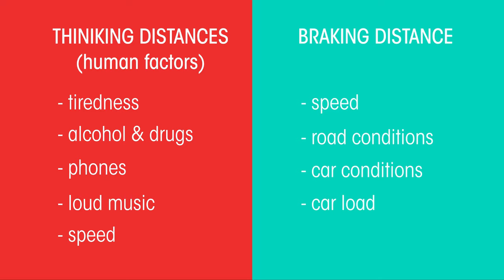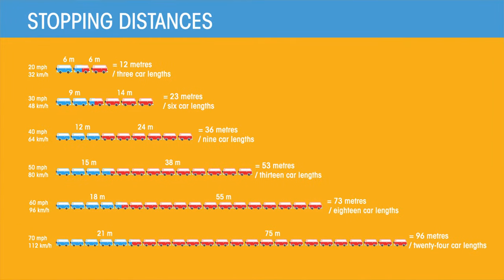But why is it important to understand stopping distances? Well, the distance taken to stop increases hugely as the speed goes up. 32 km per hour will take about 12 meters to stop on dry roads.